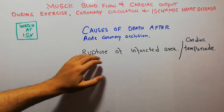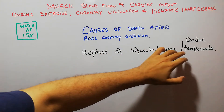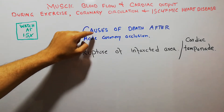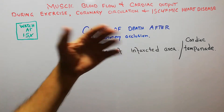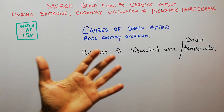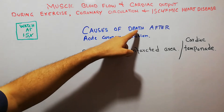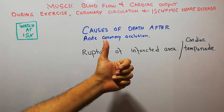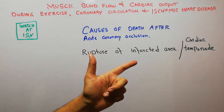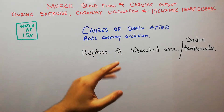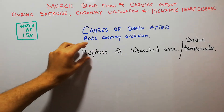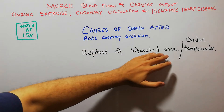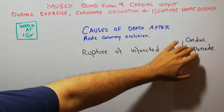Today we are going to discuss rupture of the infarcted area and cardiac tamponade. We have been discussing causes of death after acute coronary occlusion or acute MI. Important causes of death include cardiogenic shock, acute pulmonary edema, ventricular fibrillation, and finally rupture of the infarcted area, which may also lead to cardiac tamponade.